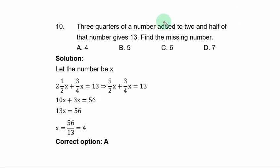Question 10. Three quarters of a number added to two and half of that number gives 13. Find the missing number. Let the number be x. From the question, three quarters of x is added to two and half of x. So, you start from two and half of x in this form plus three quarter means 3 over 4 times x. The sum is 13.